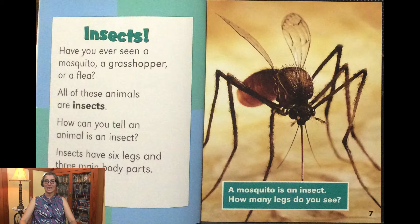How can you tell an animal is an insect? Insects have six legs and three main body parts. A mosquito is an insect — how many legs do you see?